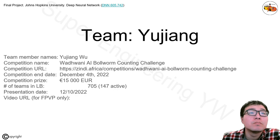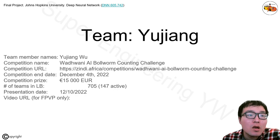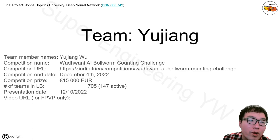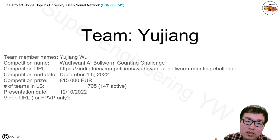Good afternoon, everyone. This is my final project for the Deep Neural Network course at Johns Hopkins University. In this context, we try to build a machine learning model that can take an image and count farming pests on the image, so that the farmer can get information and advice from experts in terms of how to apply their pesticides.